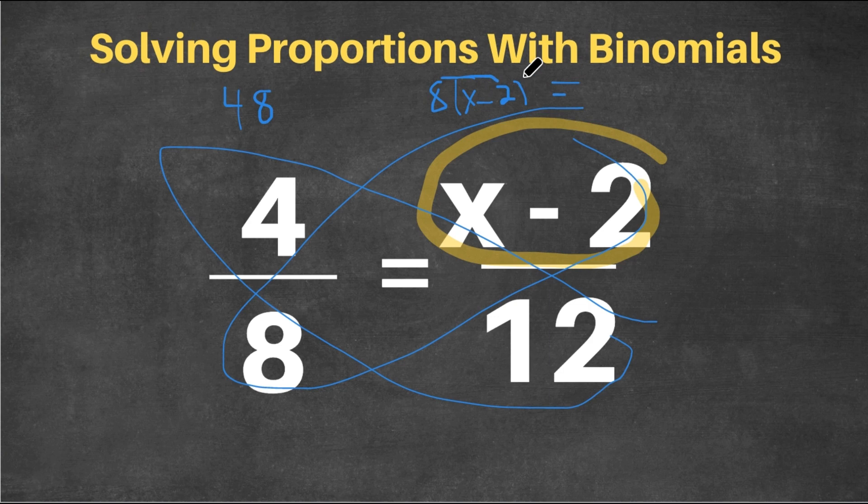So this is equal to 8 times x is 8x, and 8 times negative 2 is negative 16. So this is equal to 8x minus 16. So this is 48 equals 8x minus 16.